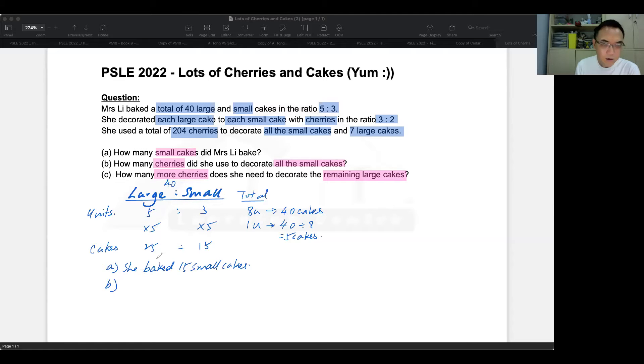Now we go on to B. B is asking you how many cherries did she use to decorate all the small cakes? The clue they gave you is that she used 204 cherries for all the small cakes, but there are some large cakes here. And she also tells you that each large cake has got three units, and each small cake has got two units.